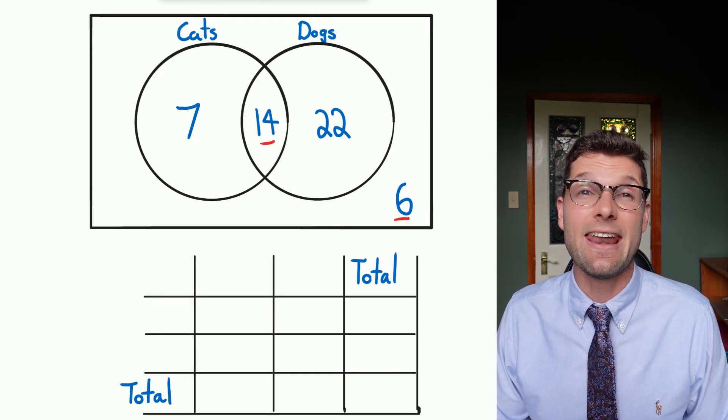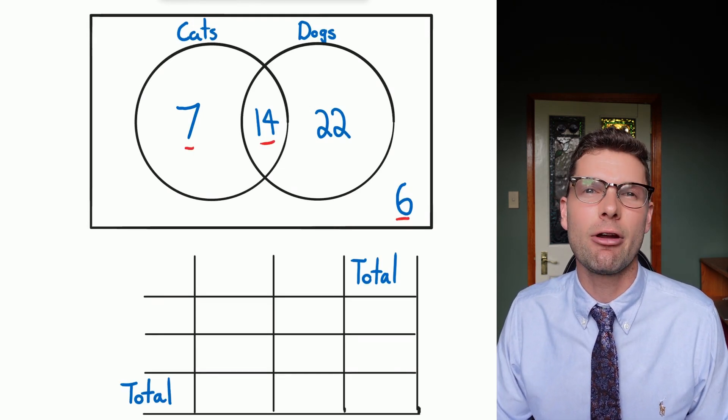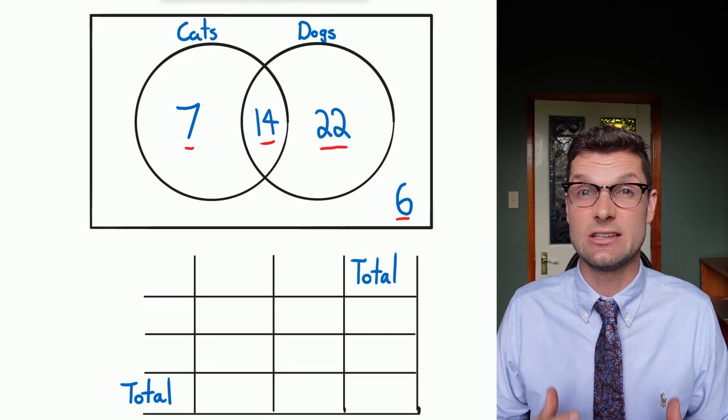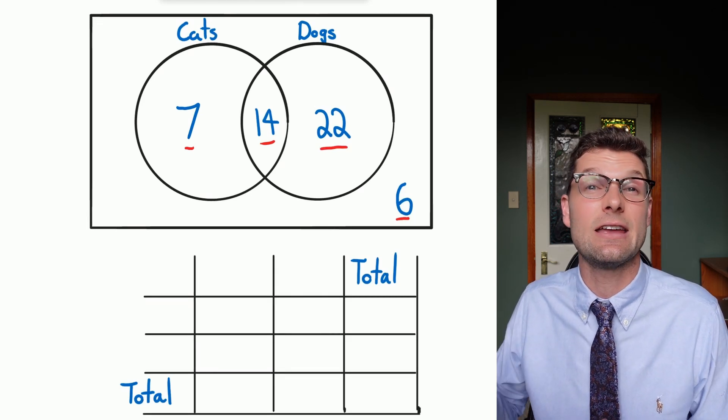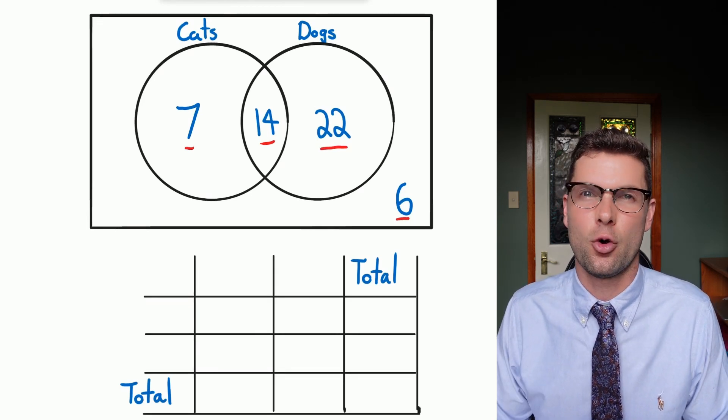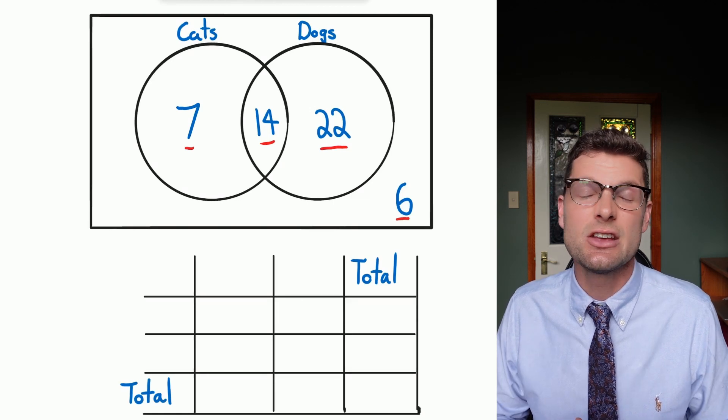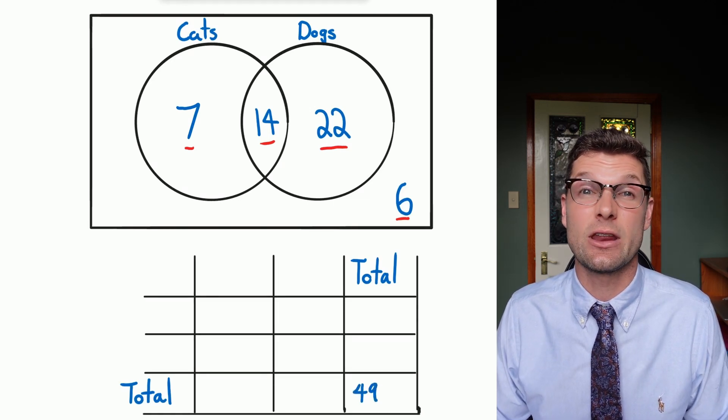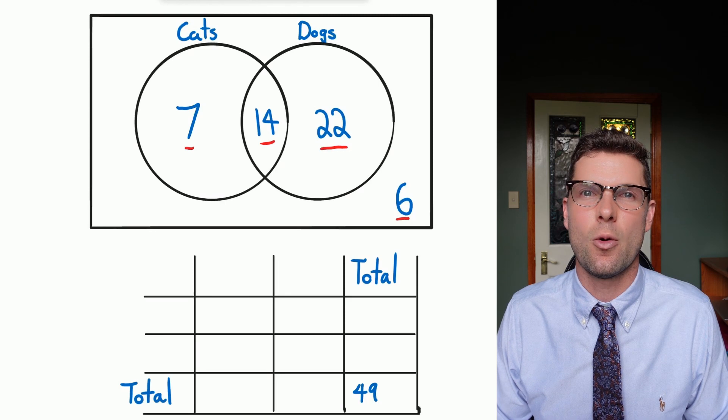So what's really important here is that we add up all the numbers in the Venn diagram and that's how many people we surveyed. We're going to put that number in the bottom right hand corner of our two-way table. So if I add these up I get the answer 49, throw it in straight away.